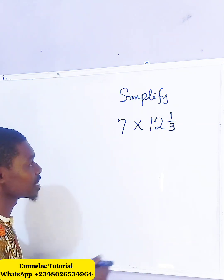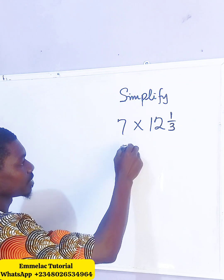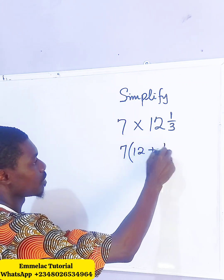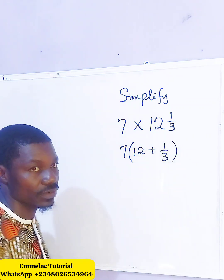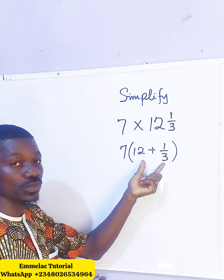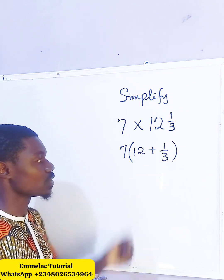This expression can be written as 7 times parentheses 12 plus 1/3, because this mixed fraction can be undone this way and be written or simplified this way.